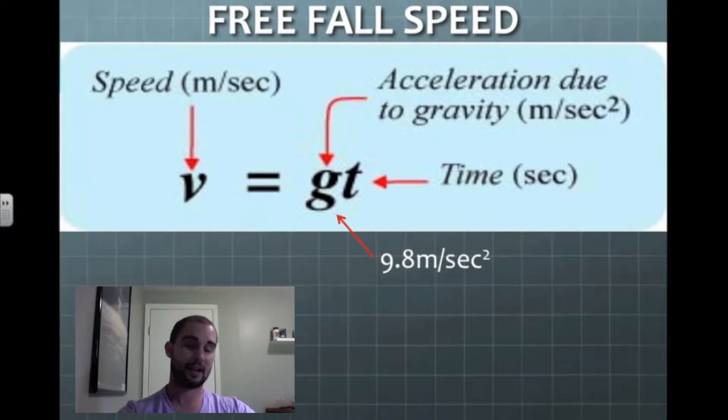On Earth, it's always going to be 9.8 meters per second squared. The T stands for time, and that's the amount of time the object's falling. And finally, V stands for speed, or velocity.